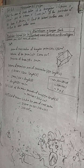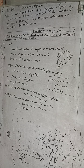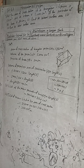So dear students, subscribers, and viewers, this is the solution for 7b. The answer for lateral surface area is 2160 cm² and the total surface area of the prism is 2412 cm².